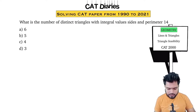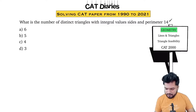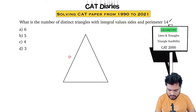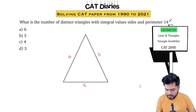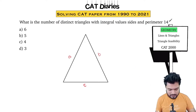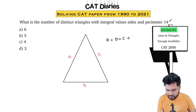The question here is: what is the number of distinct triangles with integral value sides and perimeter 14? I understand that there is a triangle with one side A, another side B, and the third side C — all three integers. Integers are one, two, three, four — natural numbers — and also negative numbers; 1.5 is not an integer. The sum of the three sides, i.e., the perimeter A plus B plus C, equals 14.